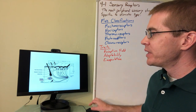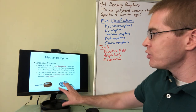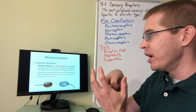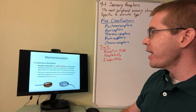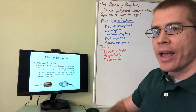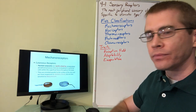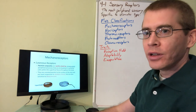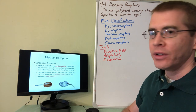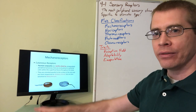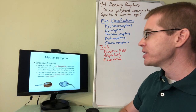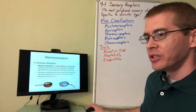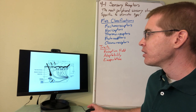Moving deeper, Pacinian corpuscles look like onions with a layered encapsulation that gets finer and finer. These respond to deep pressure as well as vibration. When you feel the vibration of a dinosaur approaching your jeep, the Pacinian corpuscle is detecting that deep vibration. These are rapidly adapting but located deeper in the skin, so a stronger stimulus is needed.